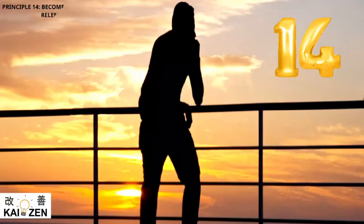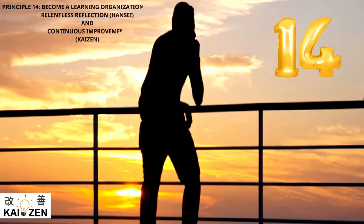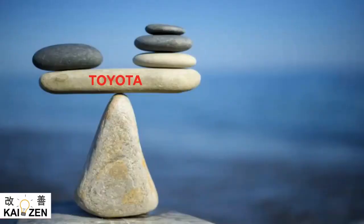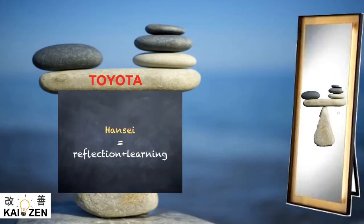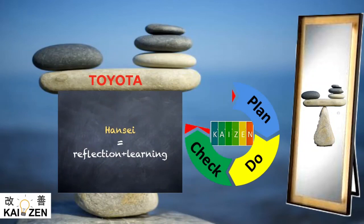Principle 14: Become a learning organization through relentless reflection and continuous improvement. Toyota believes in stability in the company. Once the stability is there, the company can engage in Hansei, which will lead to Kaizen.